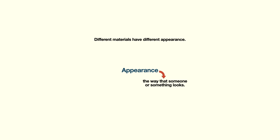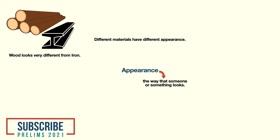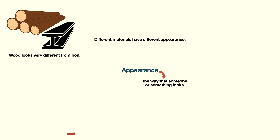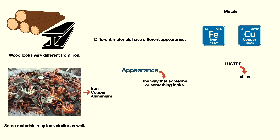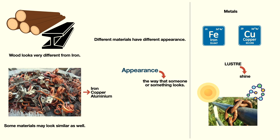Let's deal with appearance first. Appearance means how a material looks. Materials look quite different from one another due to their intrinsic makeup. For example, wood looks very different from iron or other metals. Then there are some materials which are quite similar in appearance, such as iron, copper, aluminium, gold, etc. What is common in such metals is luster — meaning shine. Most metals are comparably shiny. However, this luster withers away when these metals are exposed to air and moisture for a prolonged period of time. We will analyze this aspect in great detail in coming chapters.